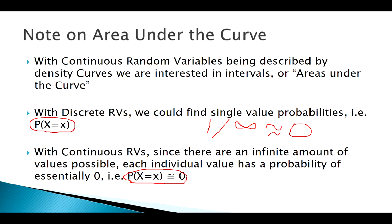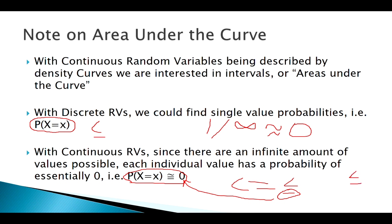With discrete random variables we had to be careful about 'greater than' versus 'greater than or equal to.' But with continuous random variables, those two are equivalent — because the 'equal to' part is essentially zero. So I don't have to be as careful when using the complement rule and converting from 'greater than' to one minus 'less than.' Technically the CDF is still defined as less than or equal to, but it's not as big of a deal with continuous distributions.